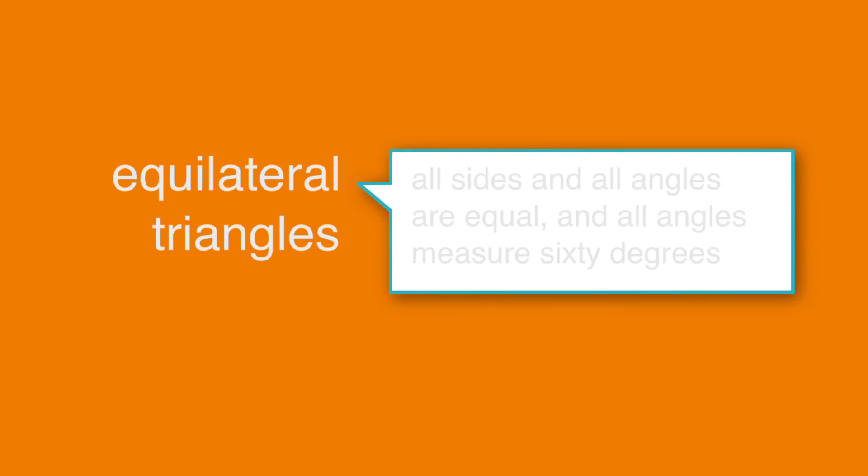Let's start with the definition: equilateral triangles are triangles in which all sides and all angles are equal, and all angles measure 60 degrees. While it's important to know the properties of an equilateral triangle, they rarely appear in their own problems on the test. They're more likely to pop up within other types of problems.